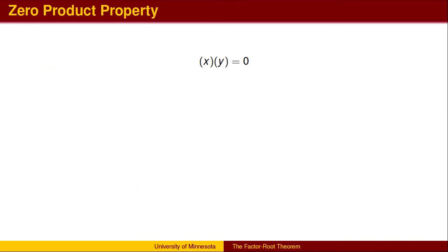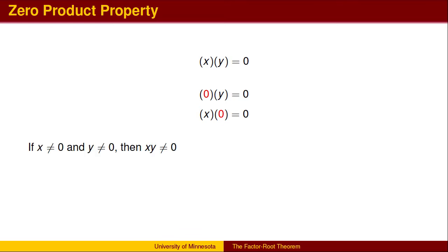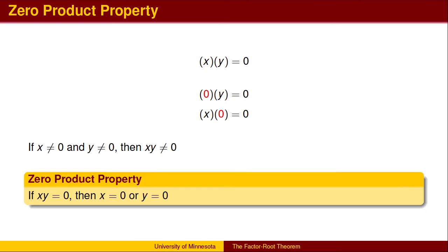We start with the zero product property, which discusses when the product of two numbers x and y can equal zero. It is easy to see that if x equals zero, then the product is zero. Likewise, if y equals zero, the product is zero. If you multiply two non-zero numbers, the answer will not be zero. Therefore, if the product of x and y is zero, then either x equals zero or y equals zero.